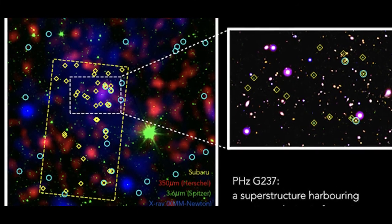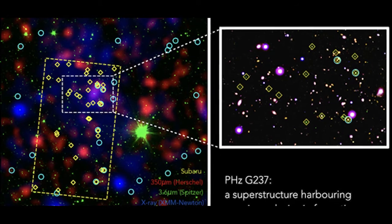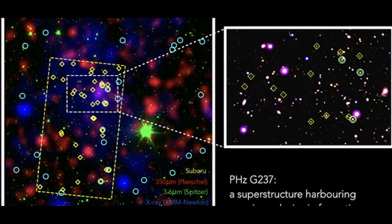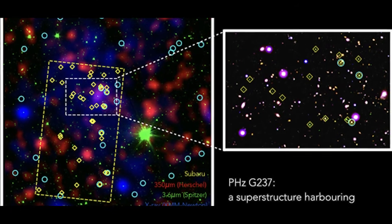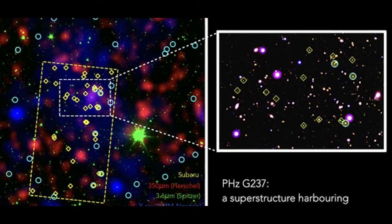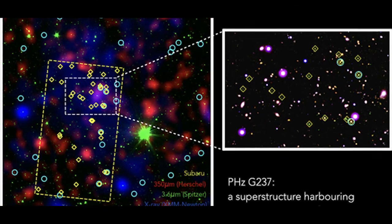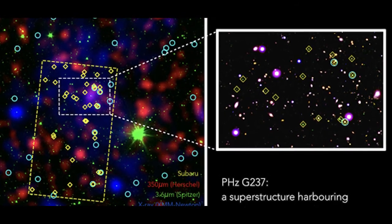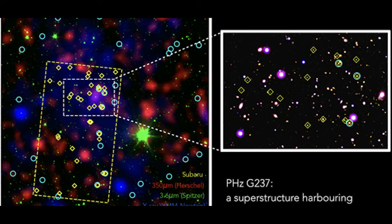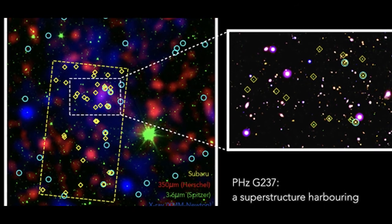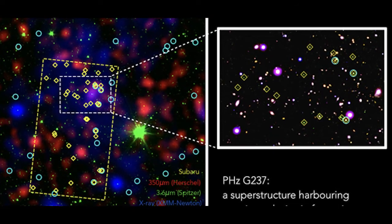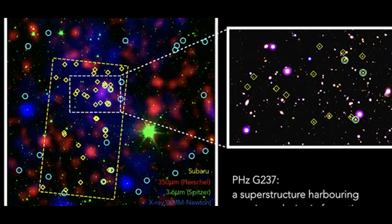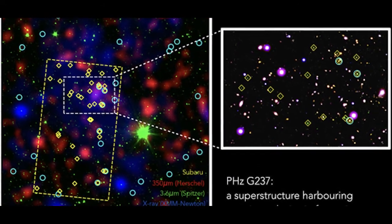Proto-clusters like this one form in regions of space where long threads of gas, called filaments, criss-cross, providing a buffet of hydrogen for gravity to coalesce into stars and galaxies. The young galaxies coming together in this shipyard appear to be growing at a voracious, almost unrealistic speed, the researchers said. The finding suggests that ancient proto-clusters were far more efficient at assembling the foundations of the modern universe than researchers ever imagined.